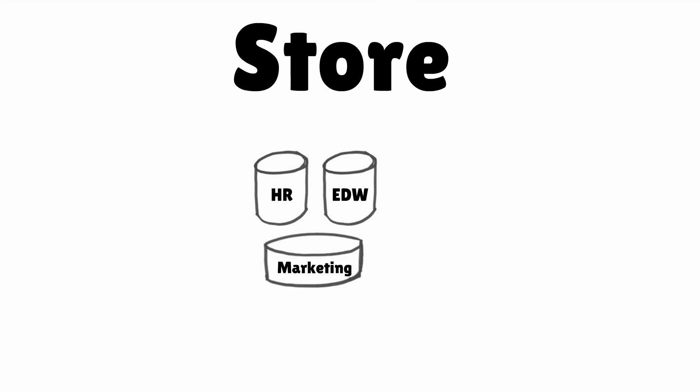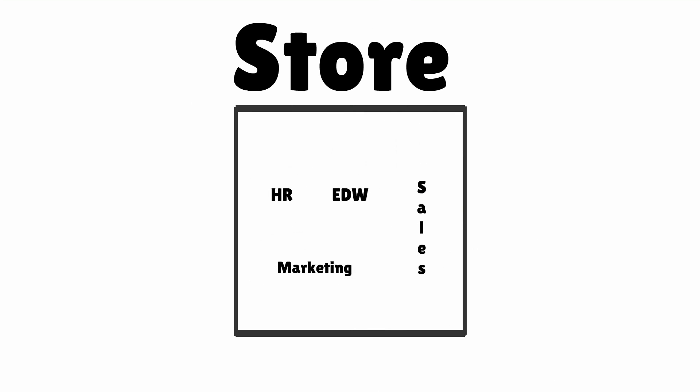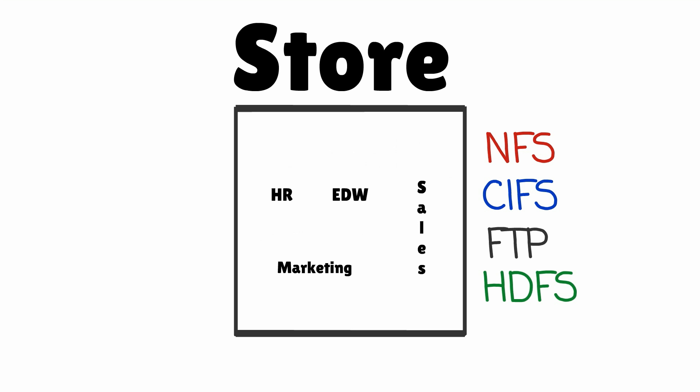Store. Getting all the data in one place and breaking down silos is the first and most important step. It is also more functional if you can provide scalable storage and multi-protocol access to all of that data. Some examples are NFS, CIFS, FTP, and newer file systems like HDFS.